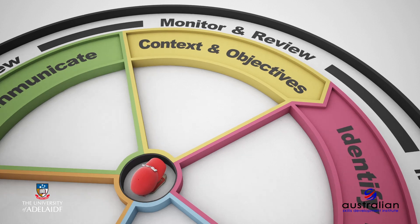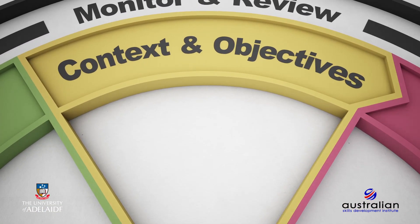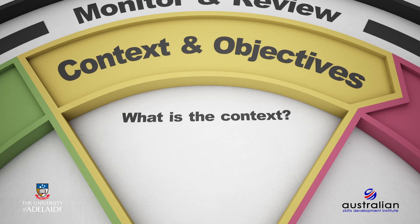The first stage of the risk management process sets the context and specifies objectives. Being the first stage, it is vital that there is absolute clarity on the context in which the risk management process is to be applied. This is followed by specifying key objectives to be achieved. The two key questions to be addressed are: first, what is the context? Consider that the process can be applied at the strategic, operational, departmental, or functional level within an organization.